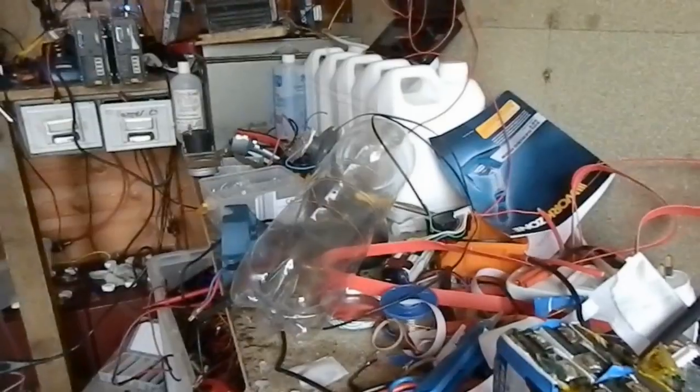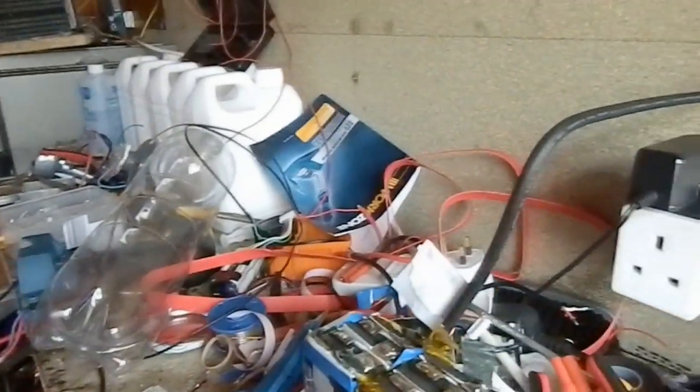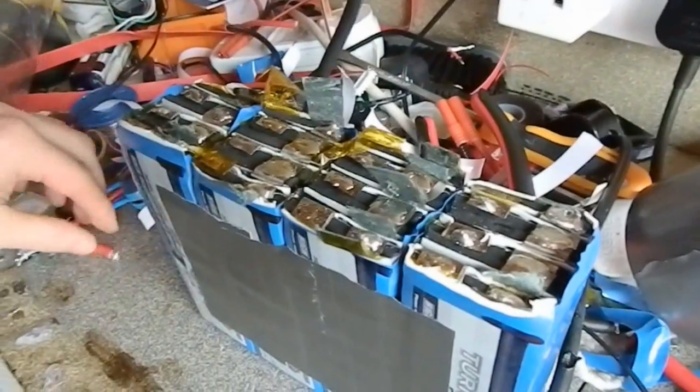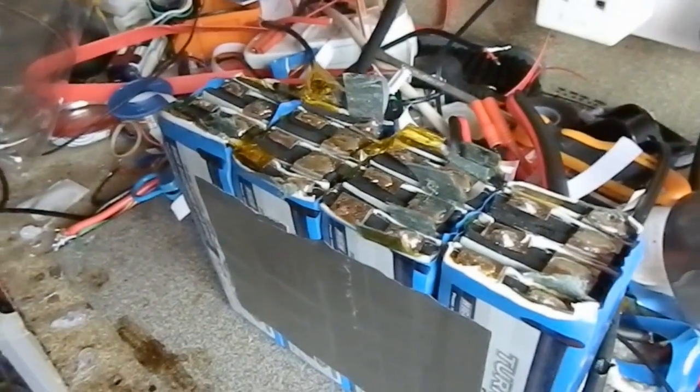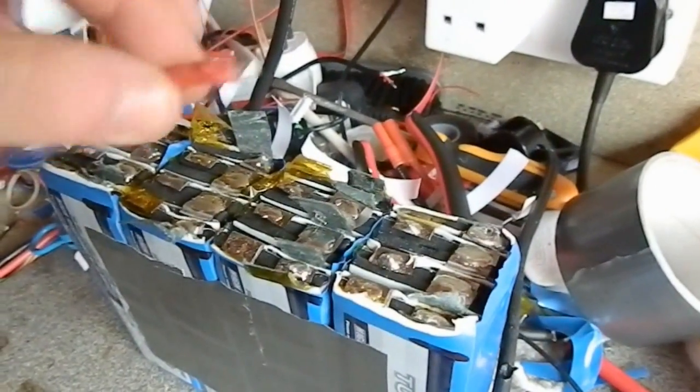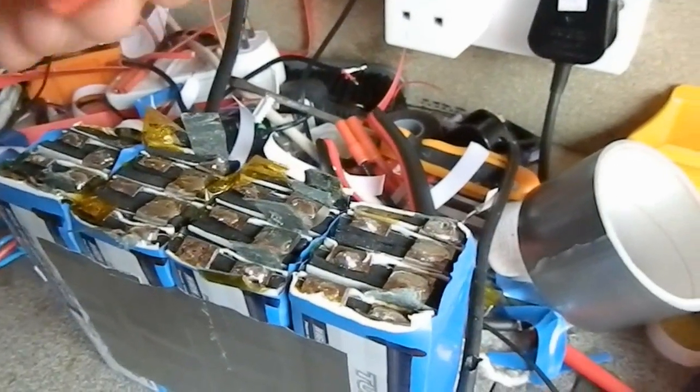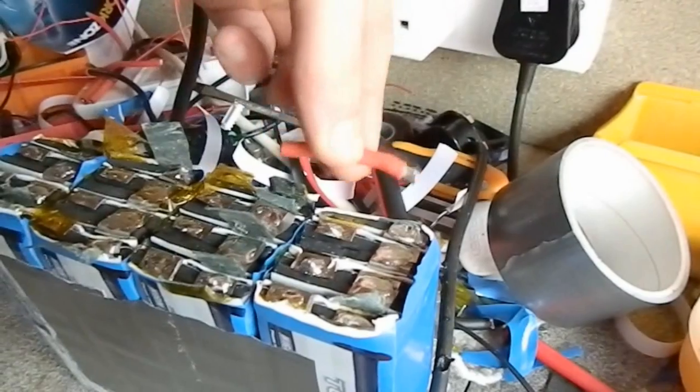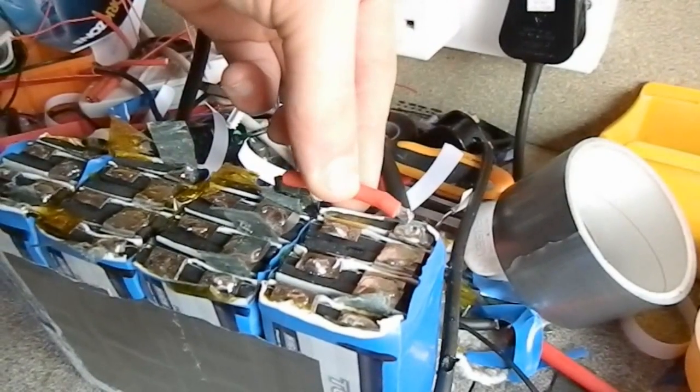But we've got these all assembled now into our pack. All I need to do is put the jumper leads over from each cell. So we've got our negatives there and our positives there.